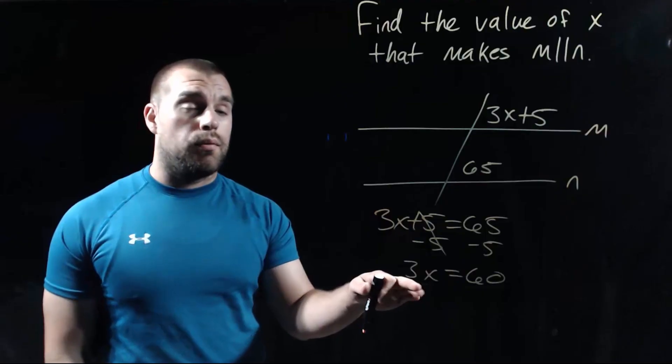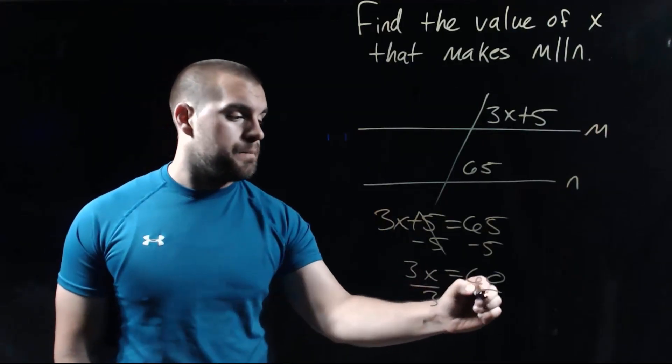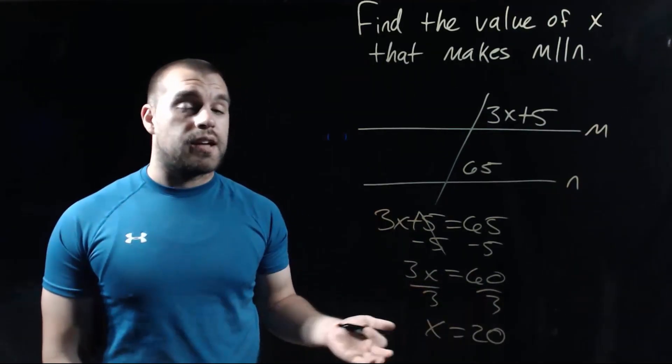Then we need to get rid of the 3 in front of the x, so we're going to do some division. And we end up with an x value of 20.